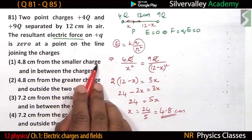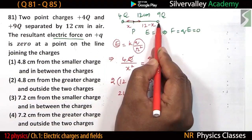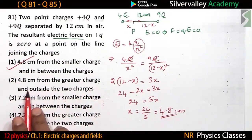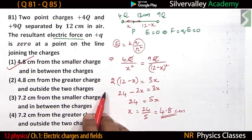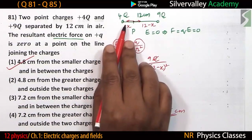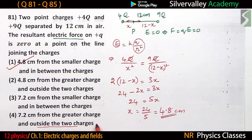The point is 4.8 centimeters from the smaller charge and in between the two charges. Checking the answer options: 7.2 centimeters from the smaller charge and in between is incorrect since the calculation gives 4.8. The option '7.2 centimeters from the greater charge and outside the charges' is also not correct — outside the charges is wrong. Therefore that option is not the answer.